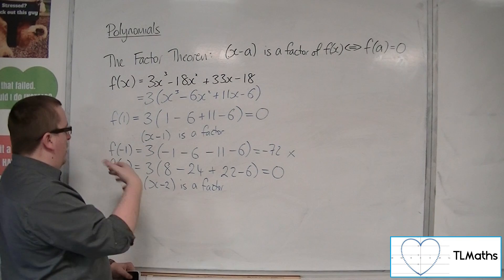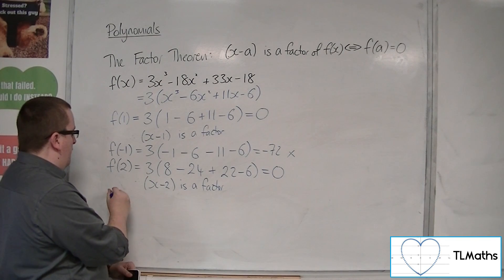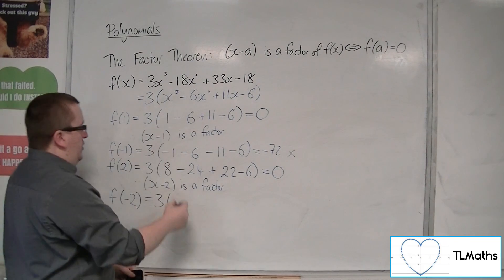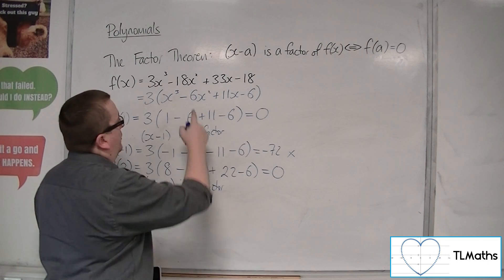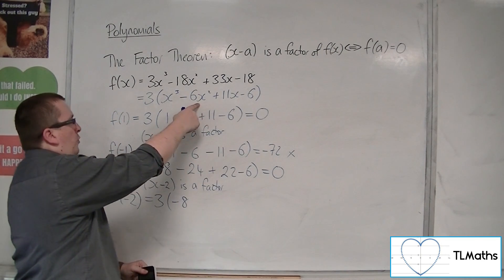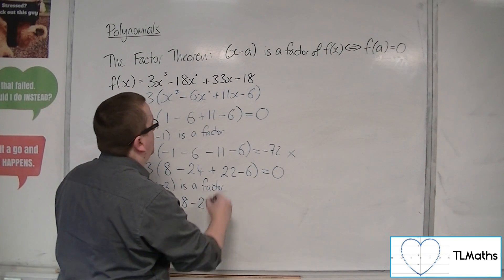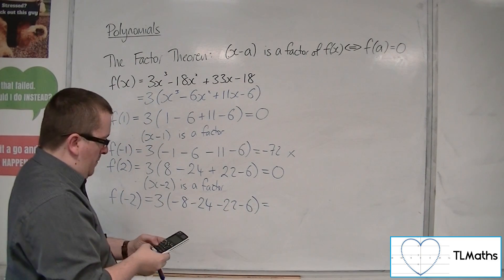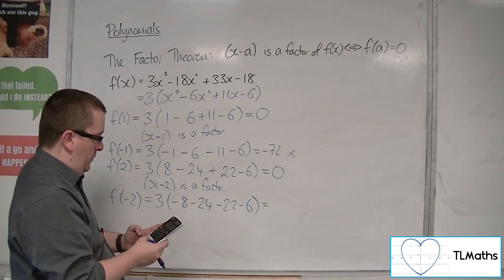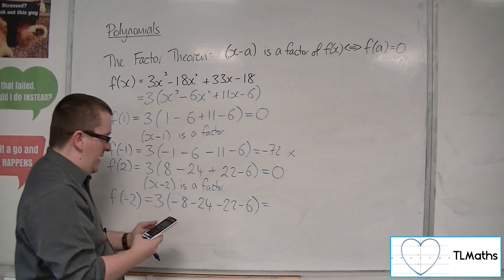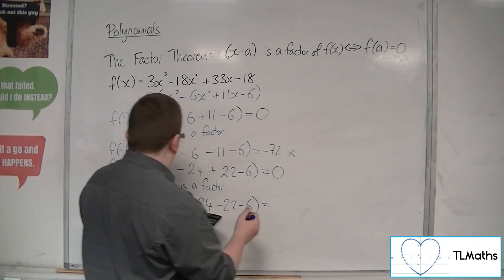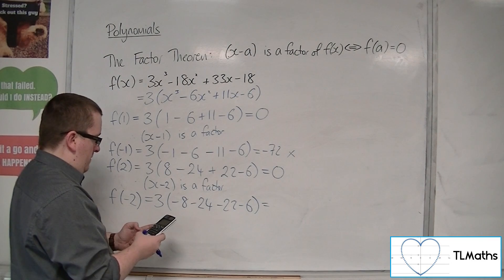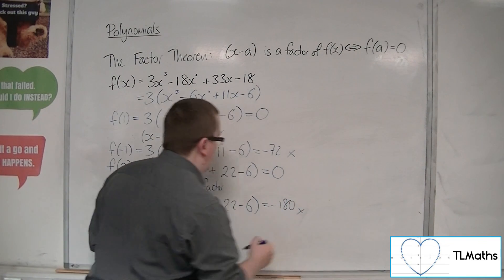However, just to kind of keep going logically, we would have tried f of minus 2 next. So this shouldn't be 0. Minus 2 cubed is minus 8. Take away 6 lots of 4, so minus 24. Take away 22, take away 6. So minus 8, take away 24, take away 22, take away 6, times by 3 is minus 180. Just to make sure I've done that right. Yes, so minus 180. So, no, that didn't work.